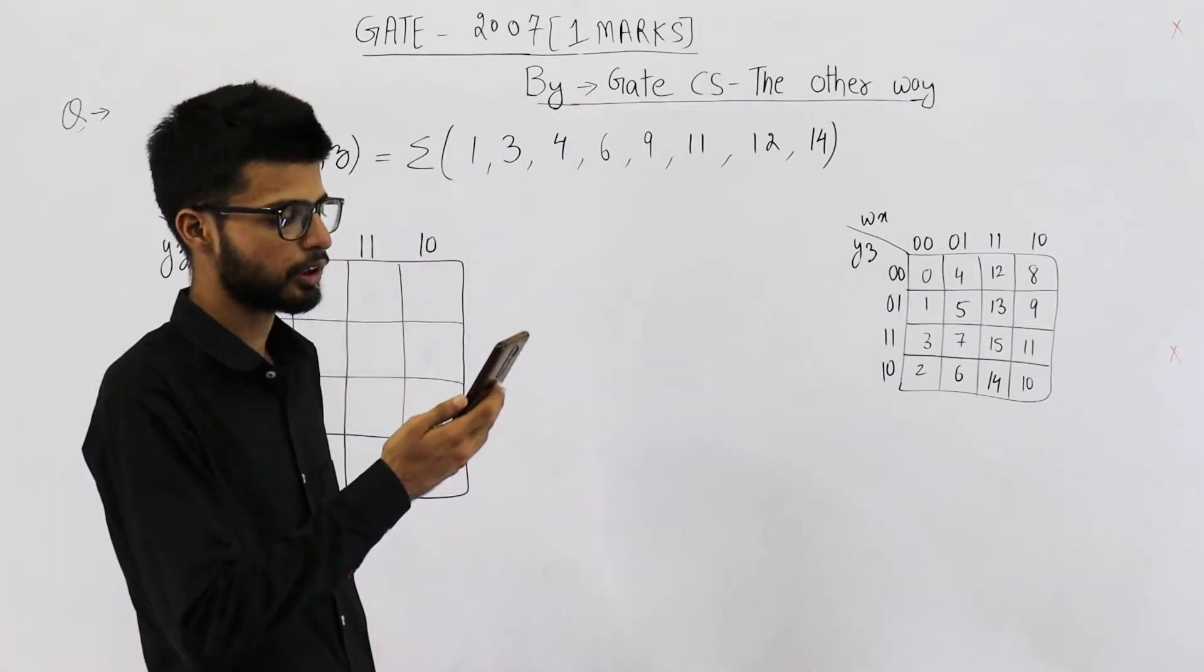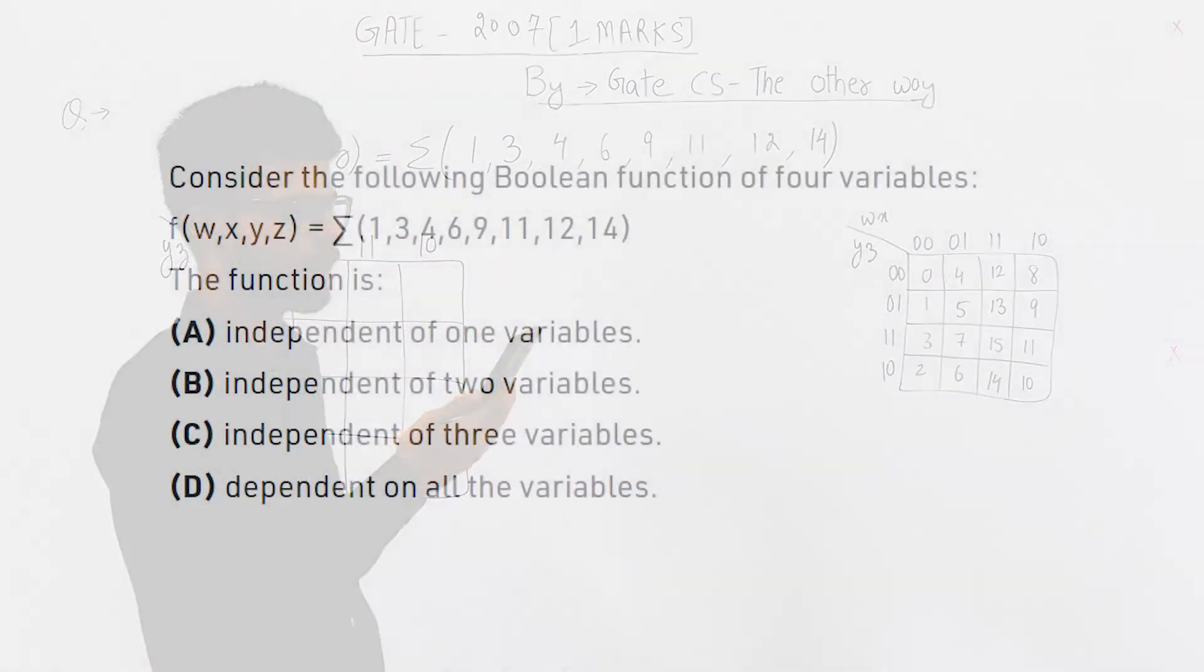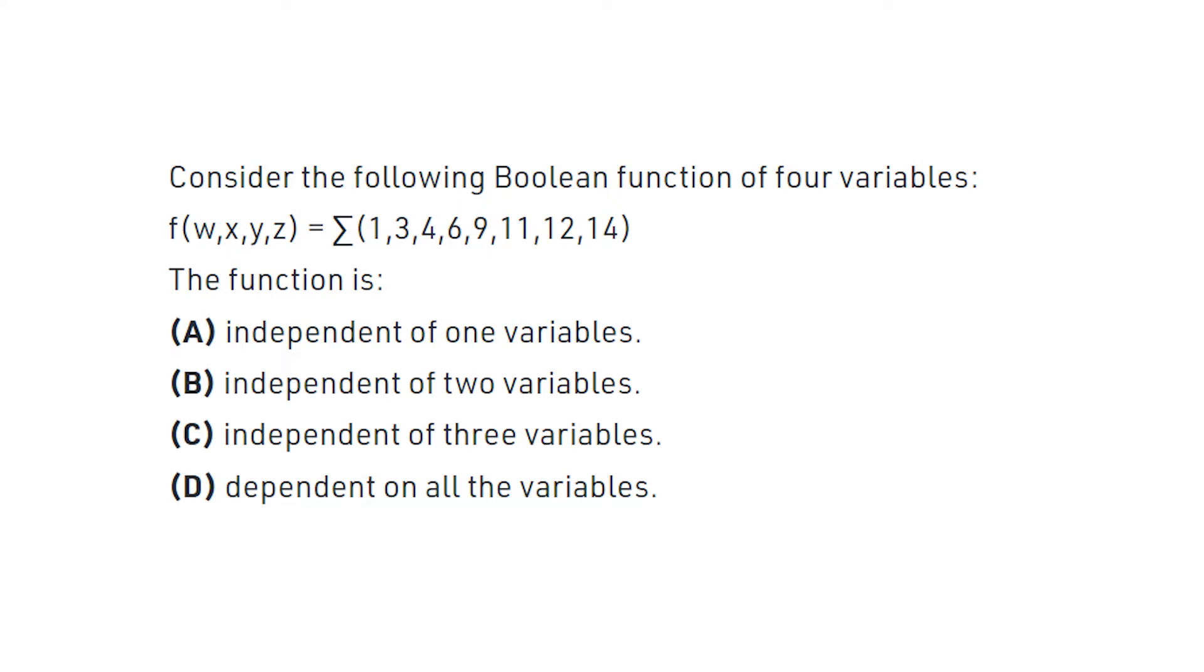Consider the following boolean function of four variables: f, w, x, y, and z. So it's dependent on these four variables. They're saying the function is option A: independent of one variable, option B: independent of two variables, C: independent of three variables, and option D: dependent on all the variables.